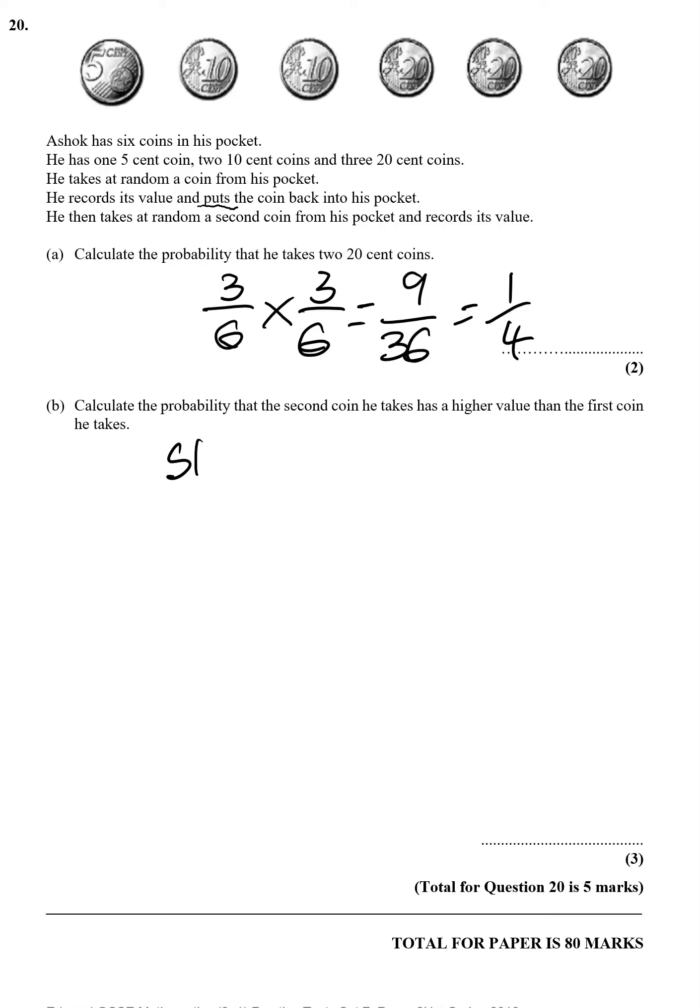So if he starts with a 5, well, the probability of getting a 5 is 1 out of 6, then the probability of getting a higher one is 5 out of 6, because it could be a 10 or a 20. So that gives us 5 over 36.